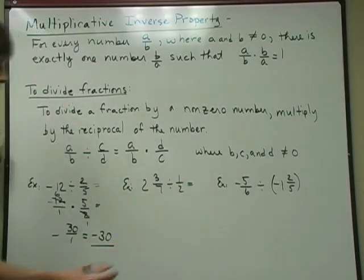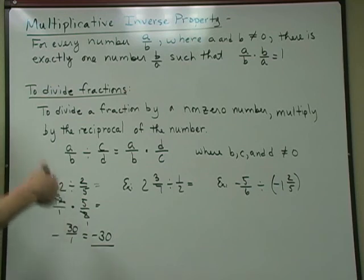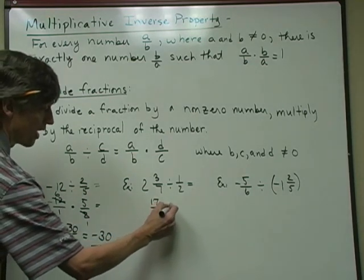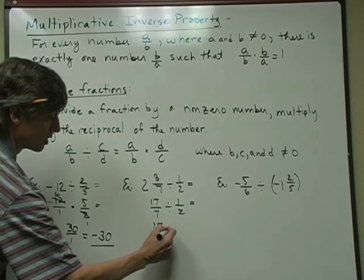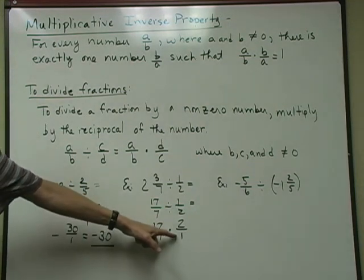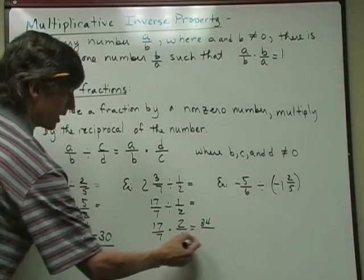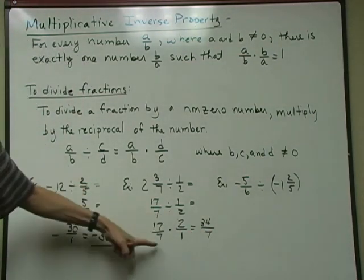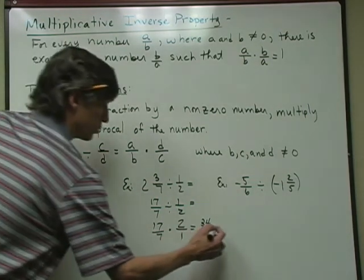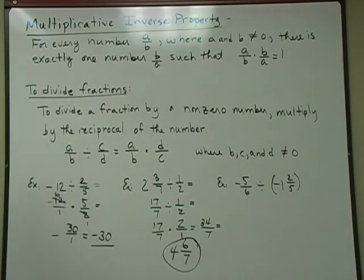Here, both numbers are positive so my answer is positive. The first number is a mixed number — I'll change it to a fraction: 7 times 2 is 14, plus 3 is 17, so it's 17 sevenths. Dividing by 1 half becomes 17 sevenths times 2 over 1. I divide by multiplying by the reciprocal. Nothing cross-cancels — I get 34 on top and 7 on the bottom. Multiply the numerators, multiply the denominators. Now my answer is an improper fraction, so I divide 7 into 34 — it goes 4 times with 6 left over. My answer is 4 and 6 sevenths.